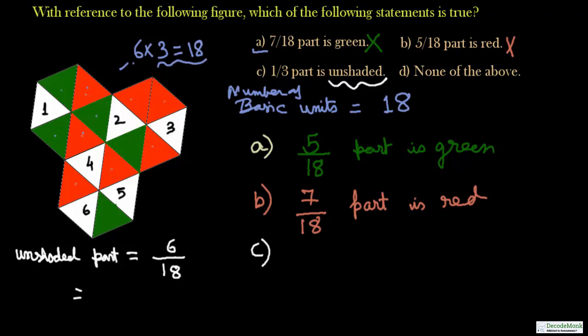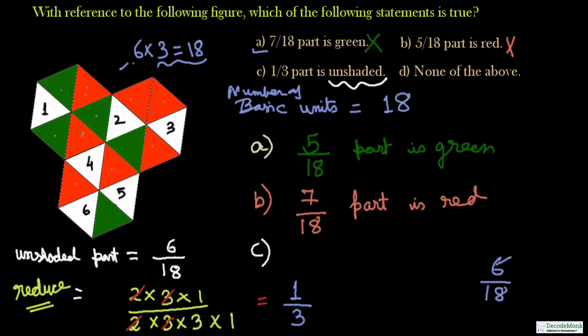You can see that 6 and 18 have got common factors. They both are there in the table of 2, 3 and 6. So this 6 can be written as 2 into 3 into 1 and 18 can be written as 2 into 3 into 3 into 1. After this we can cancel out the common terms. 2 cancels, 3 cancels, so this will be equal to 1 by 3. You can also do it like this: 6 by 18, 6 3s are 18, so 1 by 3. So 6 is one third of 18. Therefore option c is the right answer.